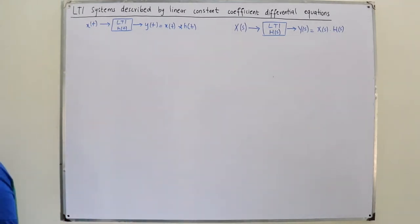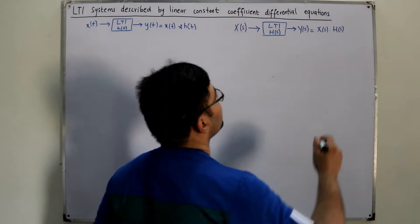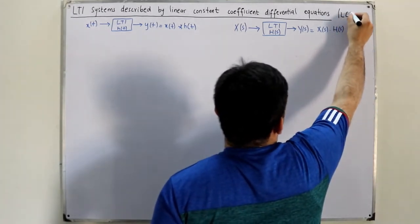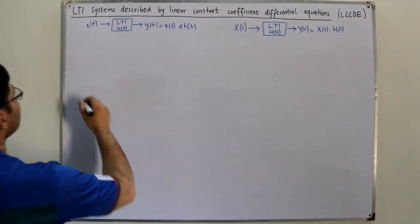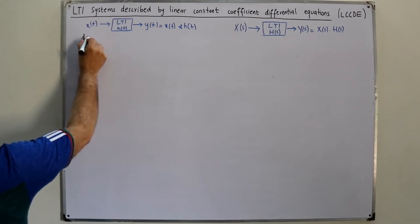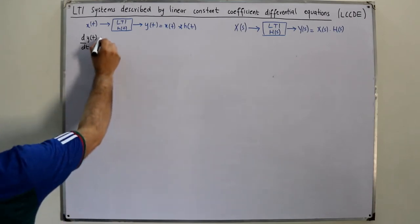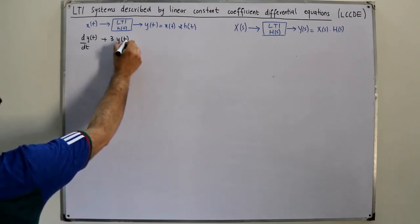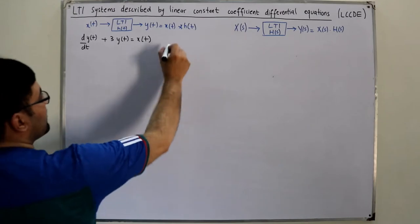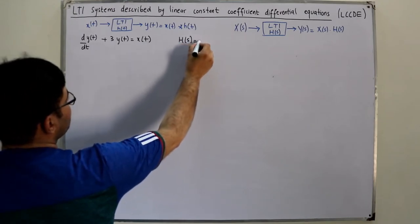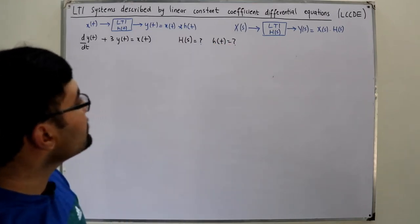Now let's say I am given a differential equation — an LCCDE. The equation is: the first derivative of y(t) with respect to t, plus three times y(t), equals x(t). I am asked to find the system function and then the corresponding impulse response of this system.